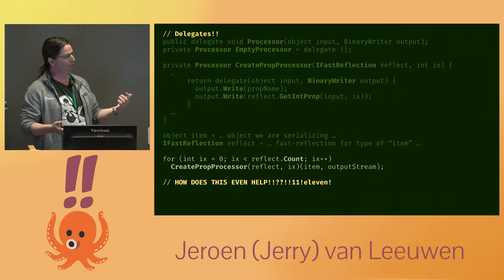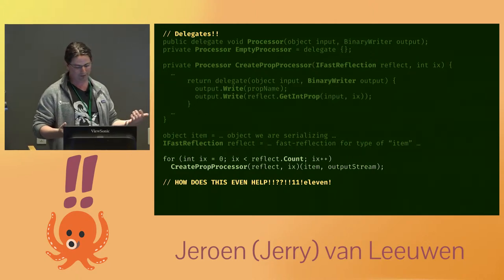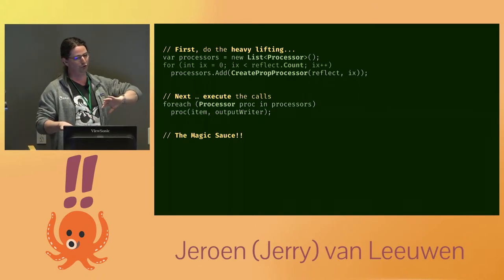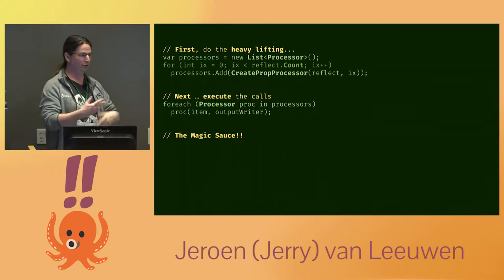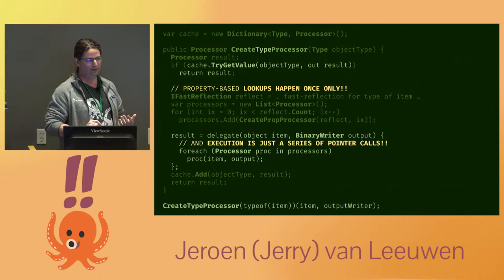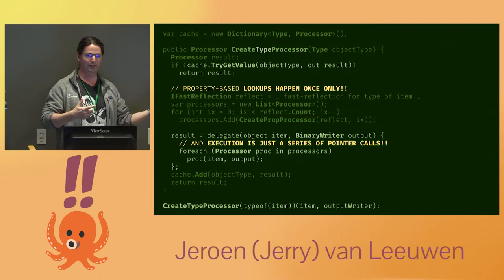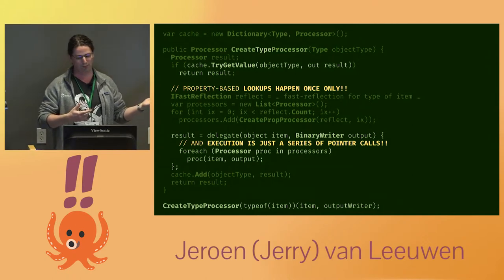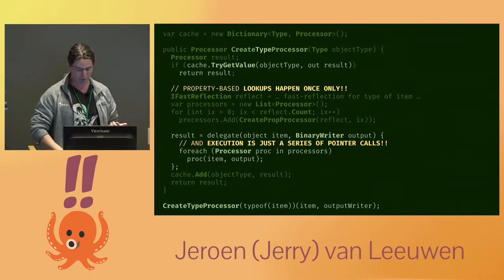To get the same effect as before, you loop through all the properties, create processors for them, and invoke them — but obviously that's not a performance win yet; it's just as slow as where we started. The interesting thing is you can split the two parts: first, do all the property processor creations and throw all the delegates into a list. Then for execution, just loop through the list and call all the methods. You can create a processor for the whole type that does that looping and cache it against the type. So the first time you serialize a type all decisions get made; everything after that is just straight method calls, one after the other — no decisions involved.